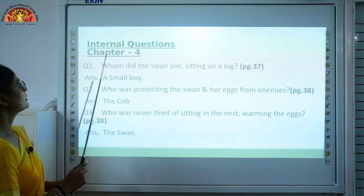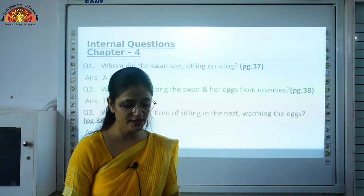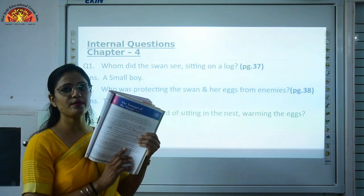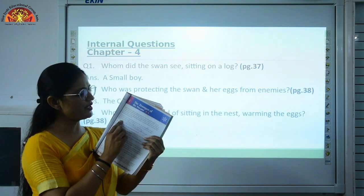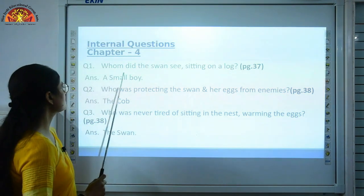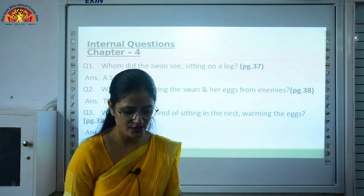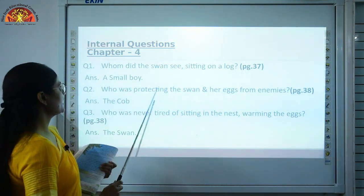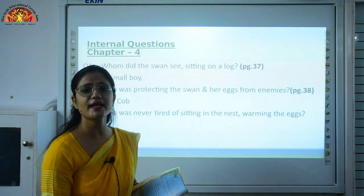Now let's see the internal questions. Whom did the swans see sitting on a log? This is on page number 37, in the second paragraph. You can write the question and mark the answer there. The swans saw a small boy sitting on the log. Who was protecting the swan and her eggs from enemies? This is on page number 38. That was the cob — the male swans are called cobs.